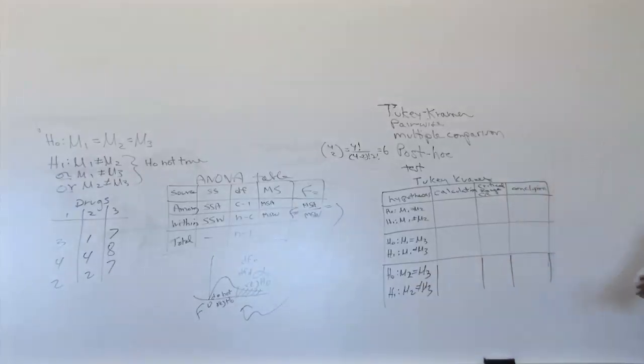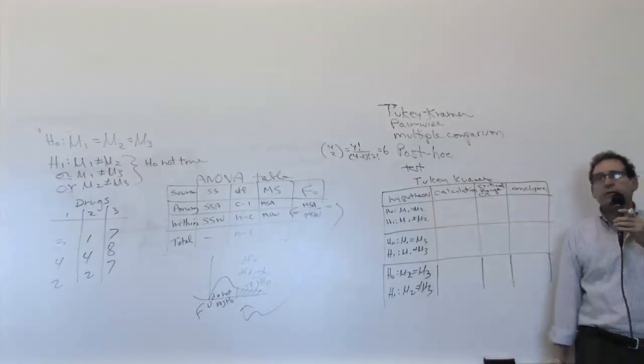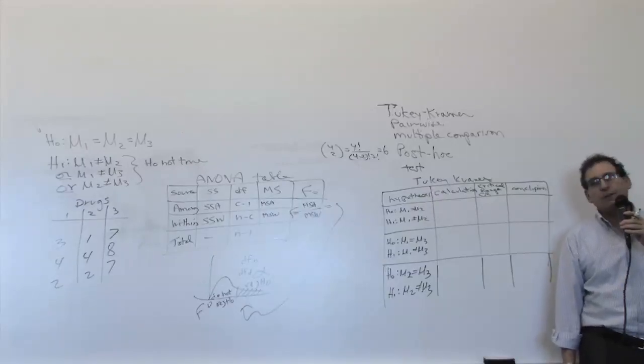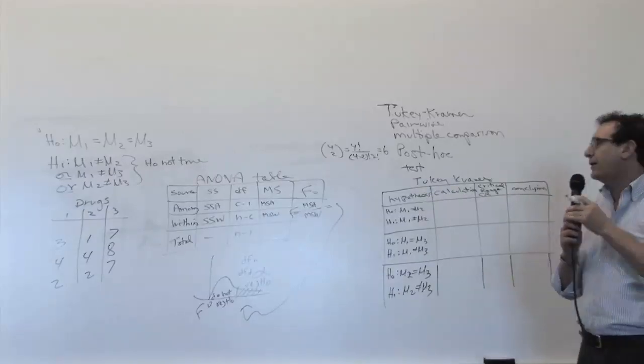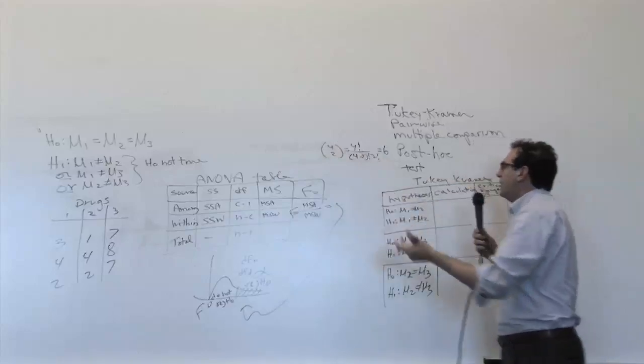If there are five columns, and I think there are some examples with five columns in the homework, how many times do you have to repeat this over? Close, but not right. Closer. Getting warm. There are ten times, because you do five choose two, and you're going to get ten.